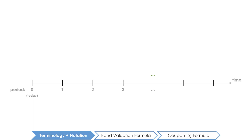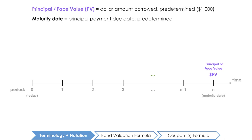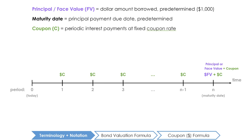All bonds share certain features, and before we can calculate the value of bonds it is first important to understand the correct terminology and notation to describe the characteristics of a bond. The amount of money that the issuer borrows from the bond holder is called the principal or the face value, abbreviated as FV. Bonds usually have a face value of $1,000. The issuer must repay the principal on a predetermined date in the future known as the maturity date. The fixed interest payments paid by the issuer each period are called the coupons and are denoted by the letter C. Rather than a dollar amount, these coupons are usually expressed as a percentage rate — called the coupon rate — to capture the size of the coupon relative to the principal.